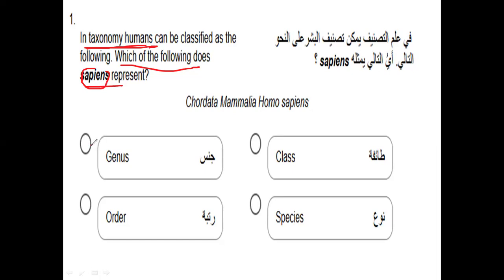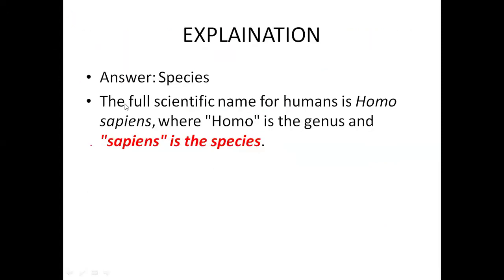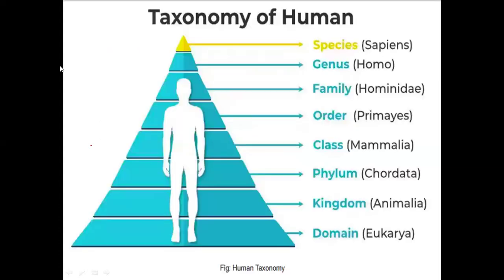'Homo' represents the genus and 'sapiens' represents the species. One thing you should remember is the human classification hierarchy. I've already shown this — make sure you remember the full taxonomy hierarchy of humans.